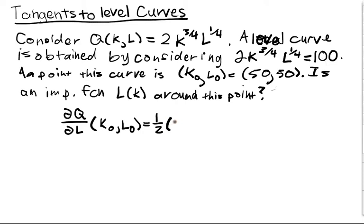Well, it turns out that the derivative is pretty simple to compute. We'll take a derivative partial with respect to L of Q, and it'll only affect this term. We'll get a negative 3 fourths, so 1 fourth will come out, we get a 1 half. And now we have 50^(3/4) times 50^(-3/4), which equals 1/2, which is not zero.